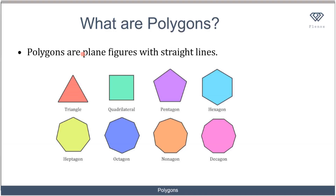Let's talk about polygons. Polygons are plane figures with straight lines. A plane figure is one that is enclosed with lines. For a shape to be enclosed with lines, you have to have at least three sides. The smallest polygon is a triangle, in which you have three straight lines being enclosed together. In other words, polygons are plane figures with three sides and above.